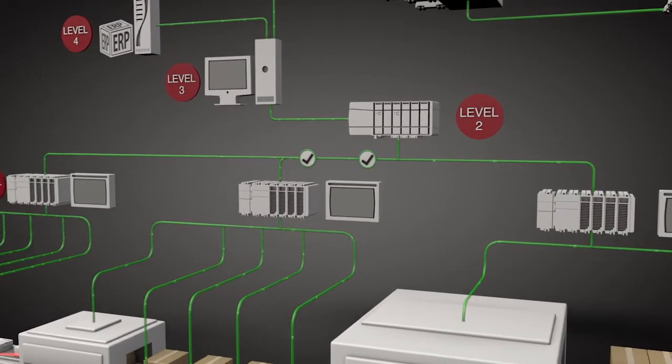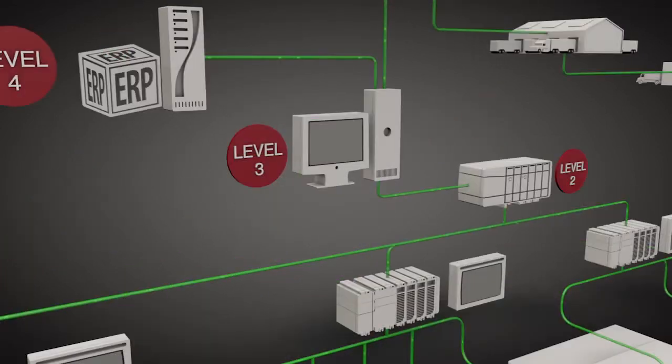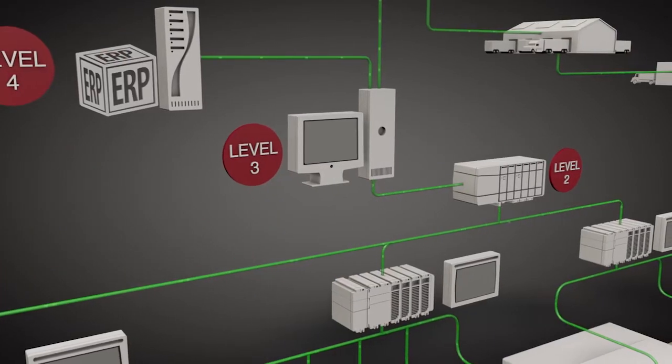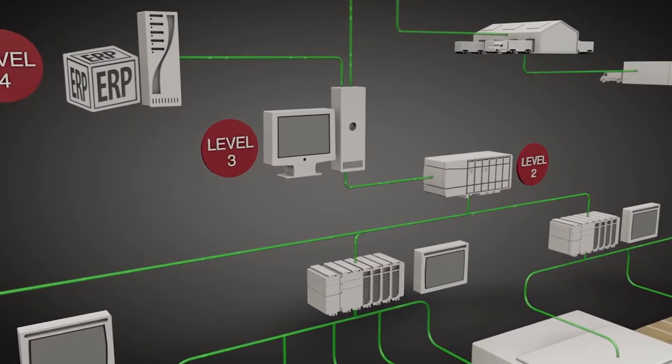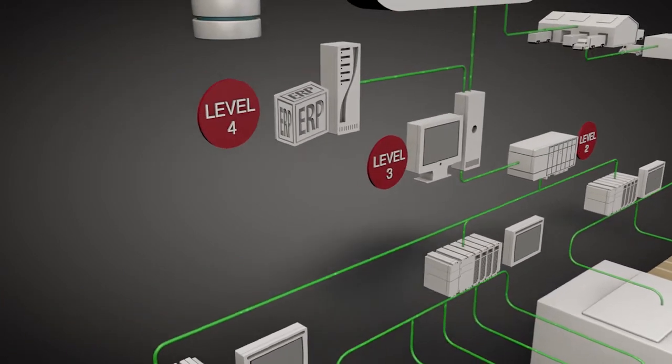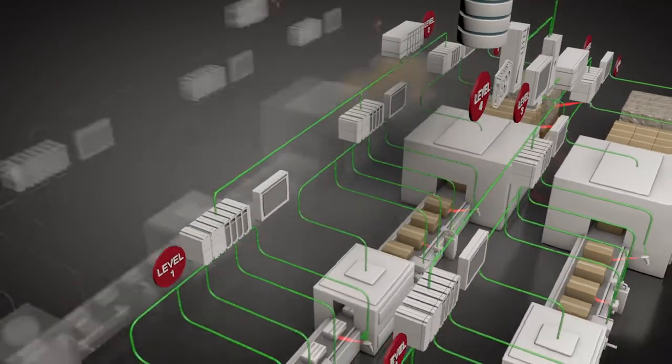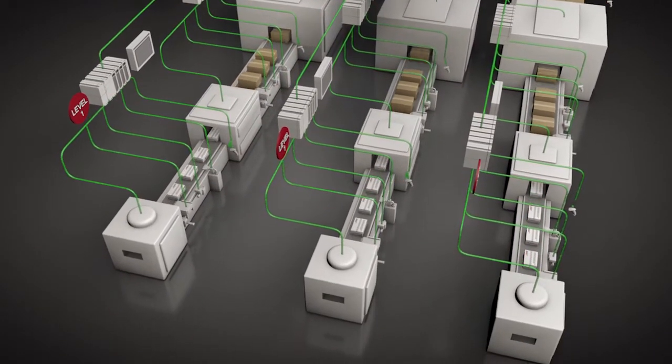It also maintains a good list until the production run is complete. The level three secure site server manages all of the serialization data throughout the plant. This ensures that the right serial number is at the right device at the right time throughout all the packaging lines in the facility.